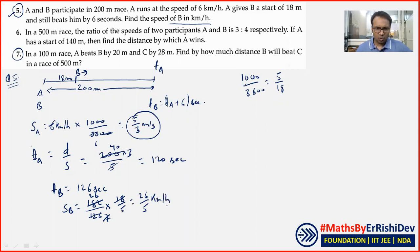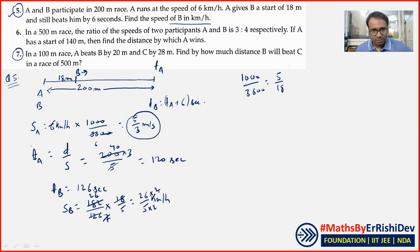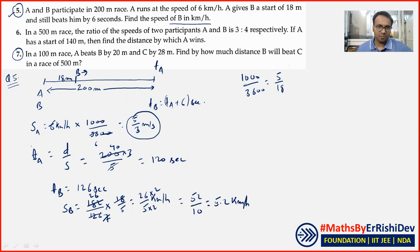کیا 26/5 answer لکھنا ٹھیک ہوگا؟ ہاں غلط نہیں، لیکن تھوڑا simplify کر لو — 2 اوپر نیچے multiply کرو تو 52/10 ہوتا ہے، جو 5.2 ہے۔ So the speed of B is 5.2 km per hour. That should be the final answer of question number 5.